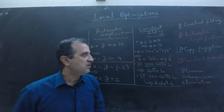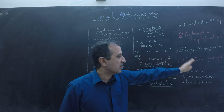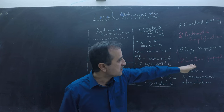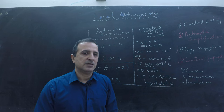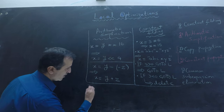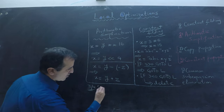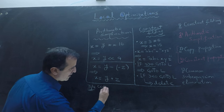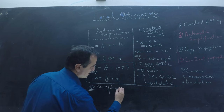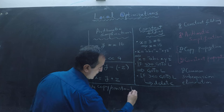The next two optimizations are related to each other — they are basically almost the same. In one we propagate a register or a variable, and in the next we propagate a constant. Now let's learn about copy and constant propagation.